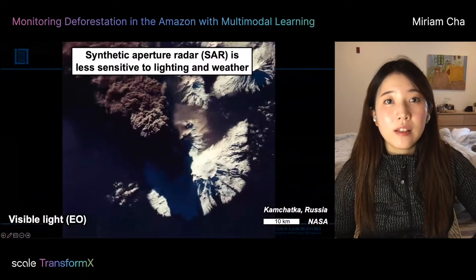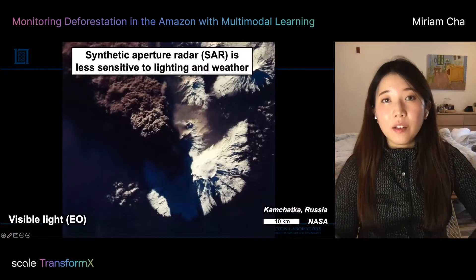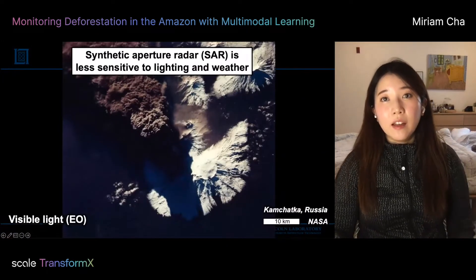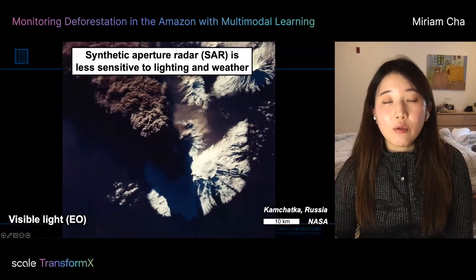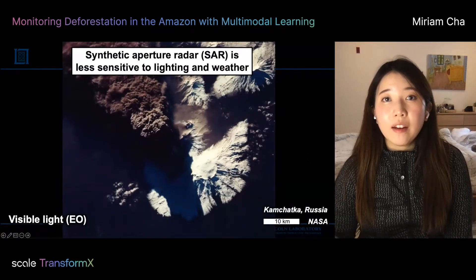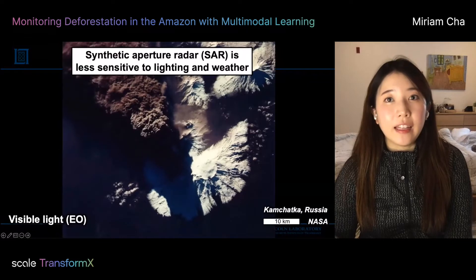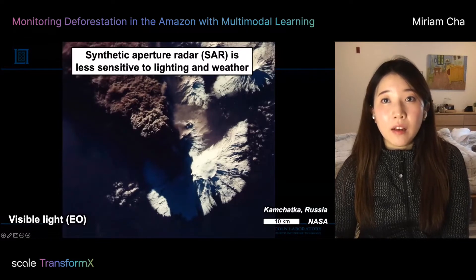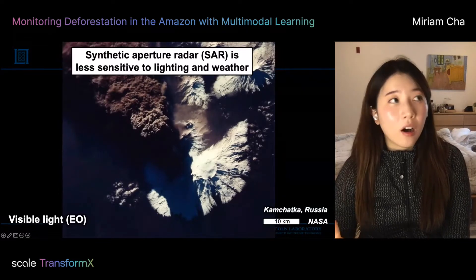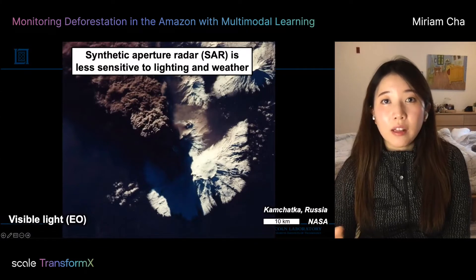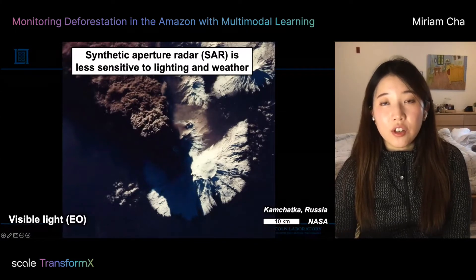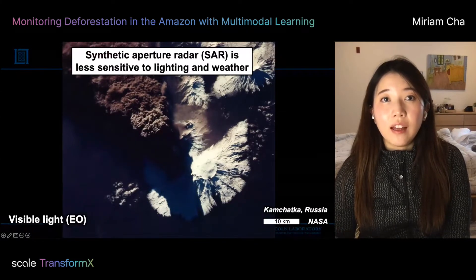SAR is an important modality in remote sensing because, unlike its optical counterpart, it can collect high-resolution images over a wide area invariant to weather and lighting conditions. Depending on wavelengths, SAR can penetrate through clouds, vegetation canopy, and even soil.